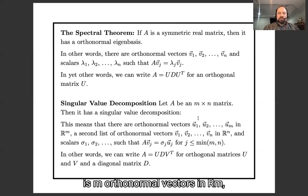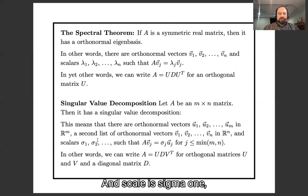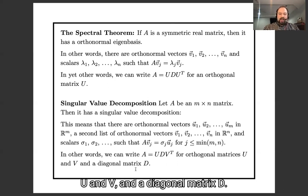The singular value decomposition is m orthonormal vectors in R^m and n orthonormal vectors in R^n and scalars σ1, σ2 and so forth such that Avj = σjuj. In other words we could write A = UDV^T for two orthogonal matrices U and V and a diagonal matrix D.